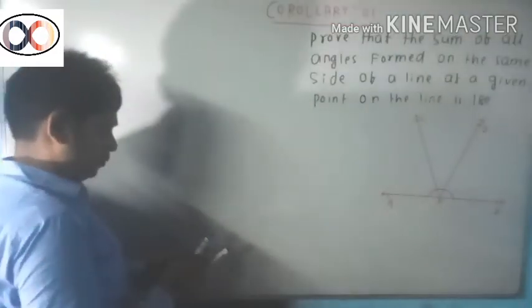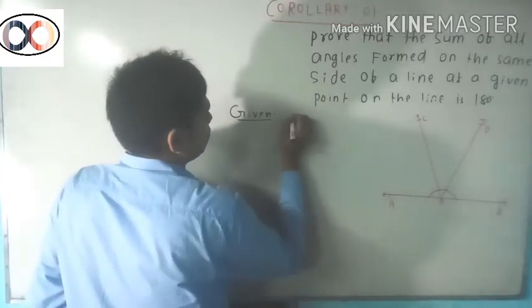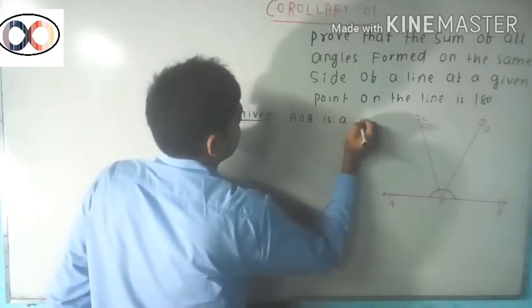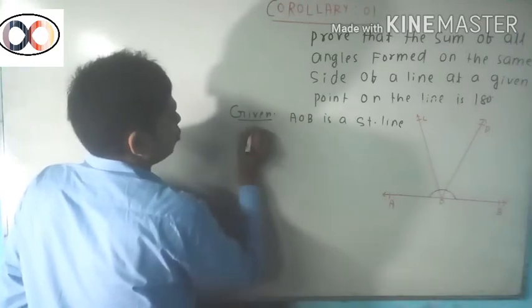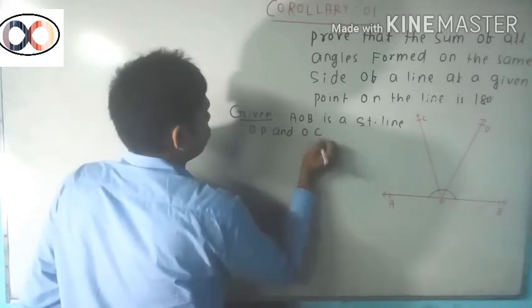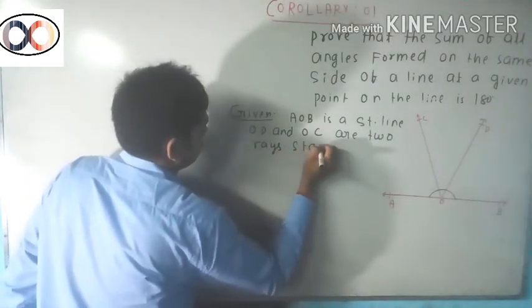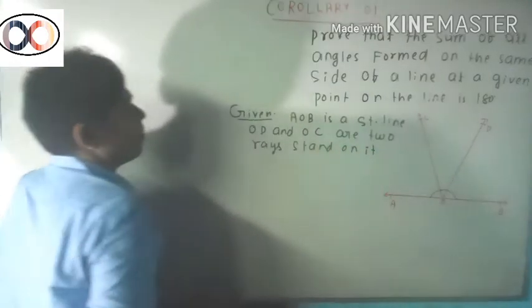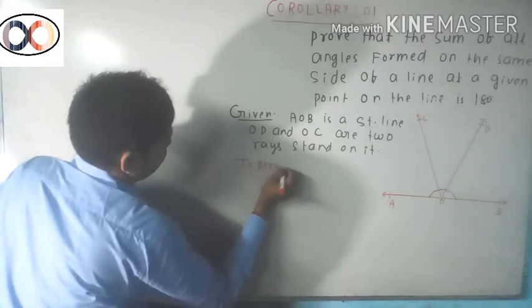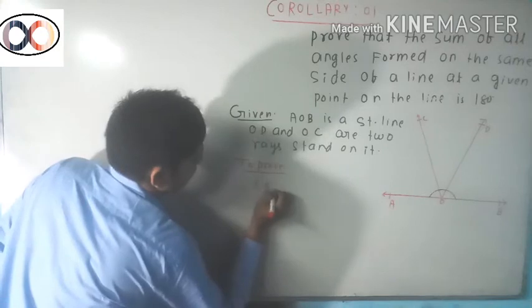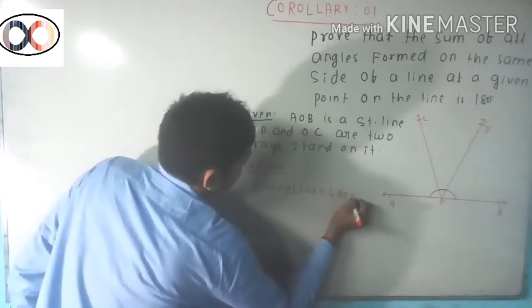Given: AOB is a straight line, and OD and OC are two rays staying on it. These rays stand on the straight line AOB.